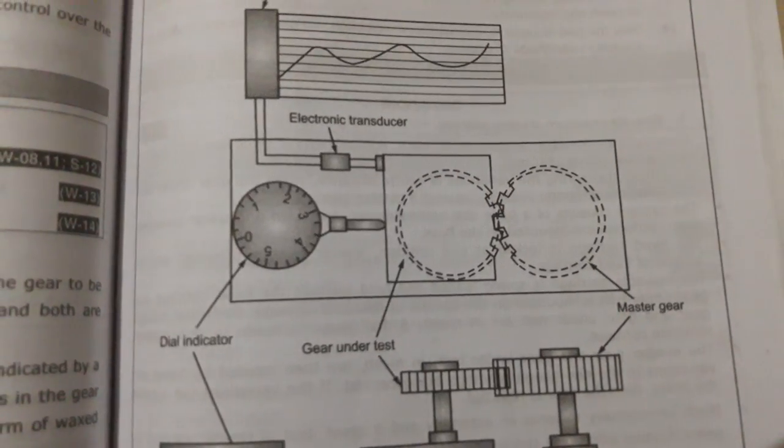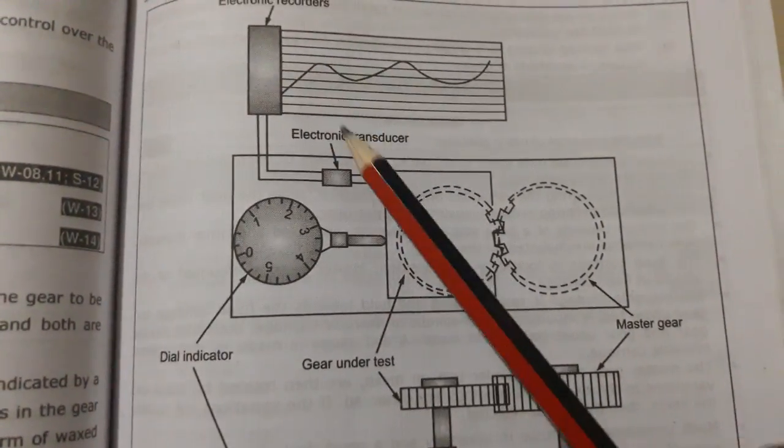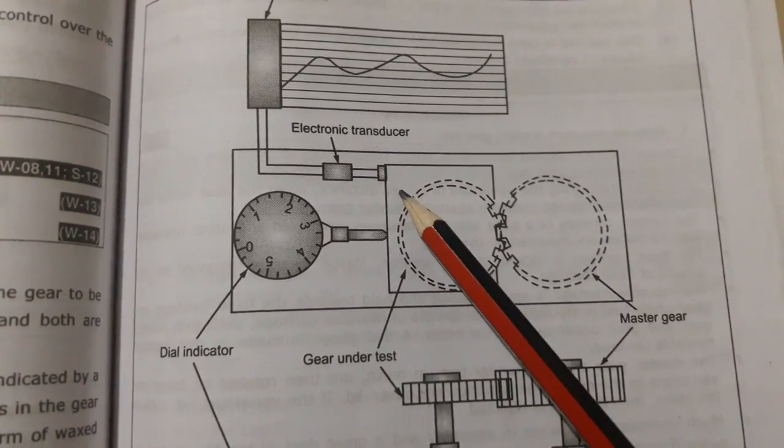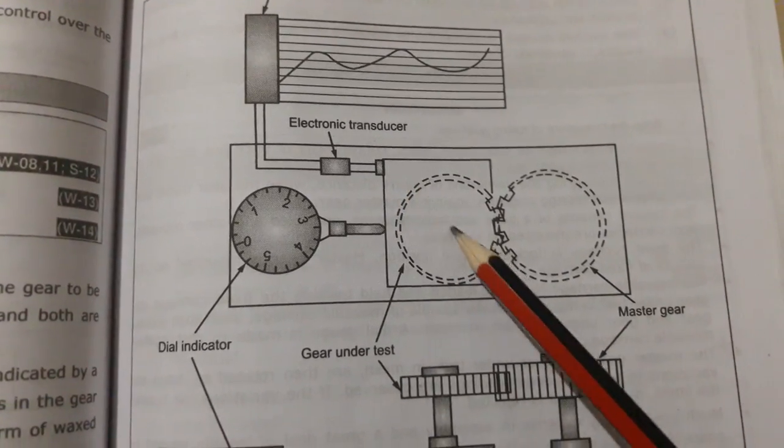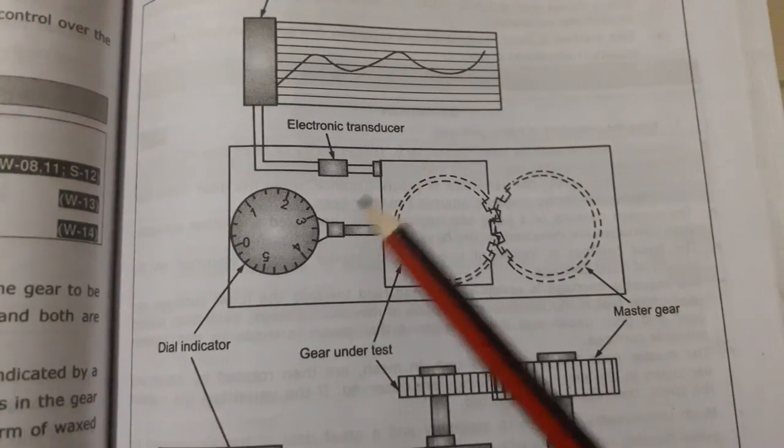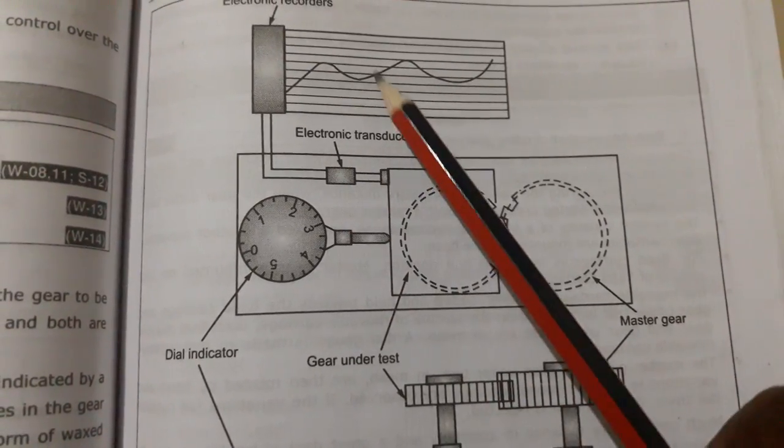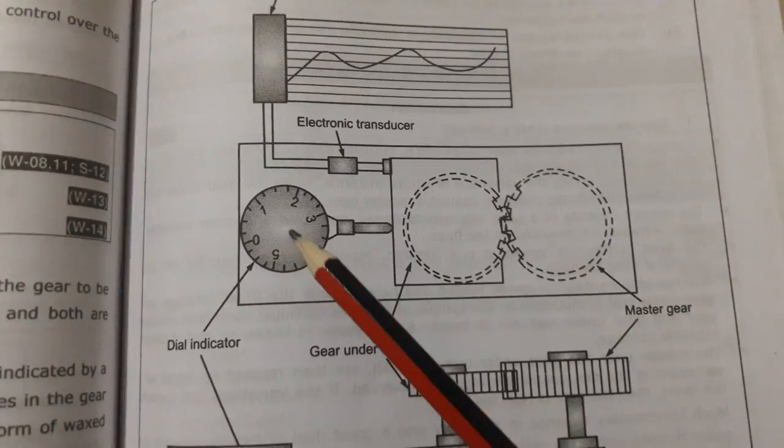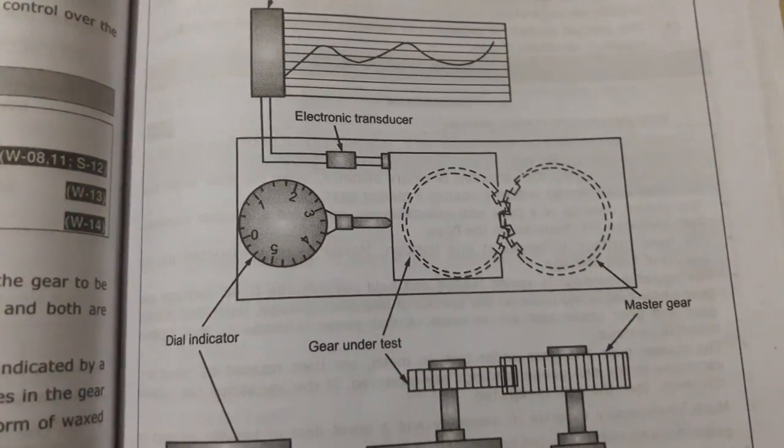So this is how the movement of the movable carriage, where the gear under test is mounted, is recorded on the waxed paper chart. We can also see this on the dial indicator.